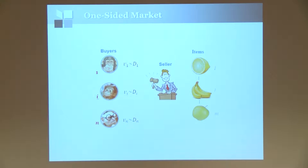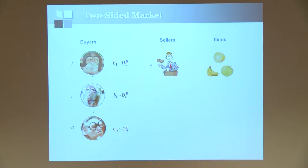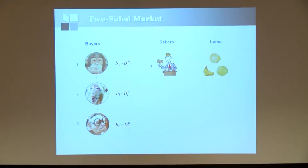Here's the one-sided market, a call auction, which I believe most of you are familiar with. There are multiple buyers, each with a value function on a set of items. It's a Bayesian setting, so this value function is drawn from some known distribution, and the seller who owns these items wants to design a mechanism to sell her items to the buyers. In the past few years, there has been increasing interest in how to design mechanisms in two-sided markets.